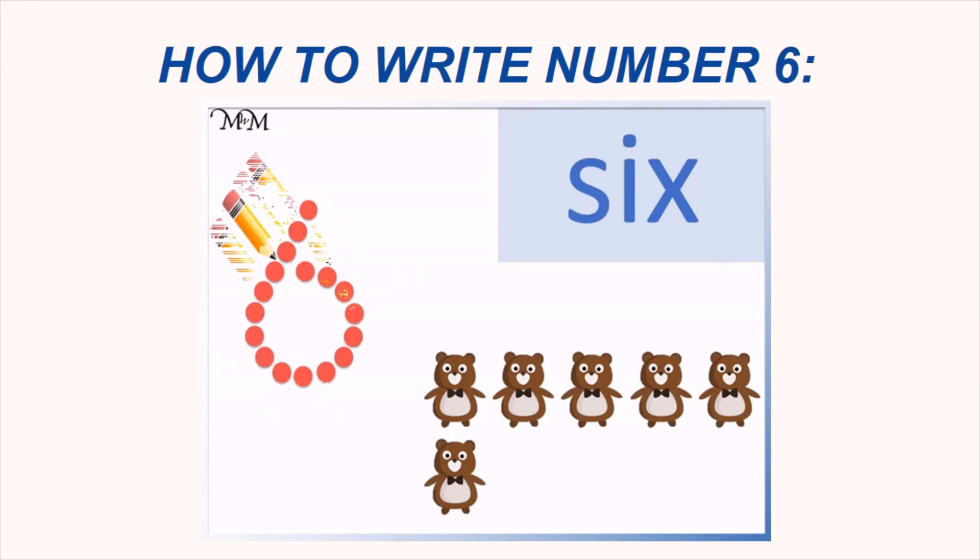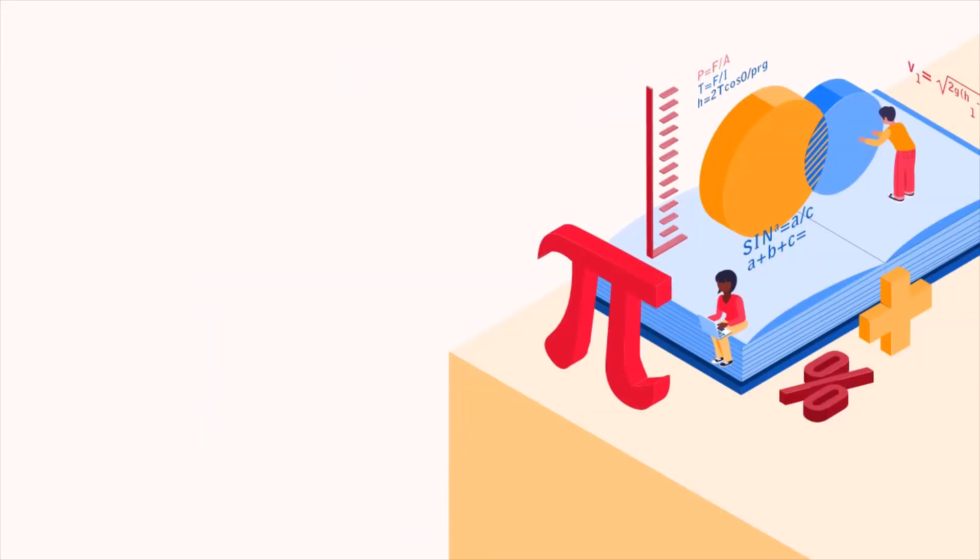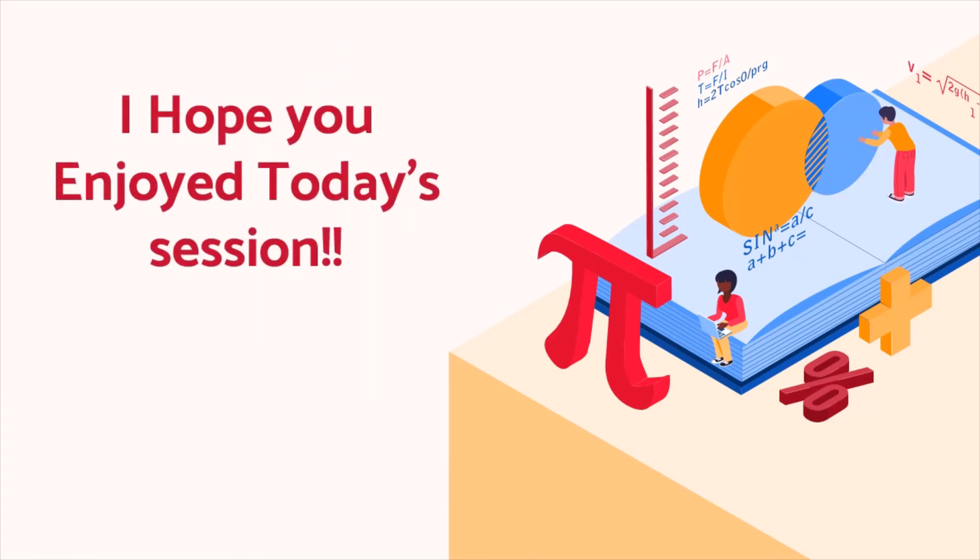Let's repeat once more. A slanting line and a circle. 6 is done. So kids, I hope you enjoyed today's session.